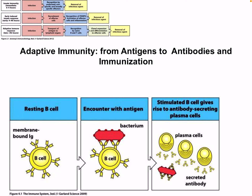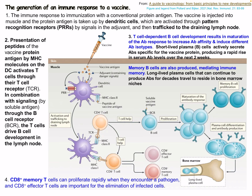Welcome to our lecture. Today we're going to be looking at antigens and antibodies and the adaptive immune system. Here we can see a quick overview: we have a resting B cell with our membrane-bound immunoglobulin, then an encounter with an antigen, our B cell engaging with the bacterium, and our plasma cells which are effector molecules of the B cells. Today we'll be looking at a lot of stuff related to immunology and vaccinology, and this is probably the most relevant lecture related to SARS-CoV-2.